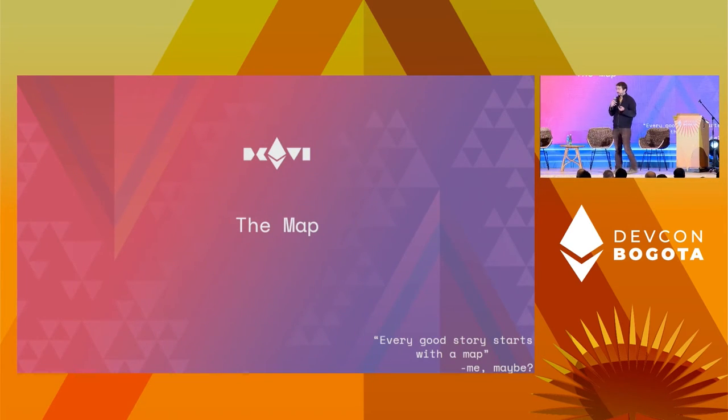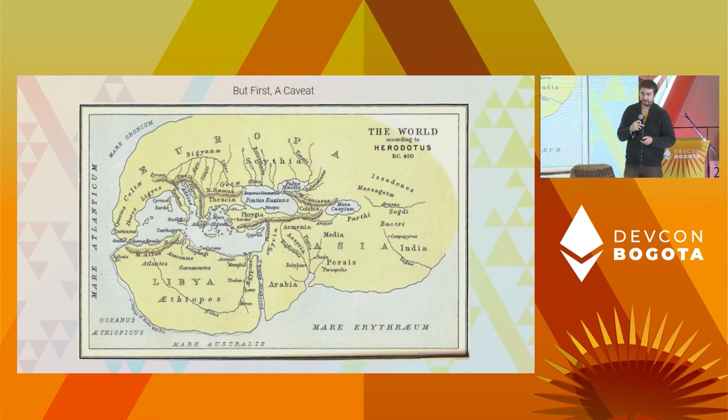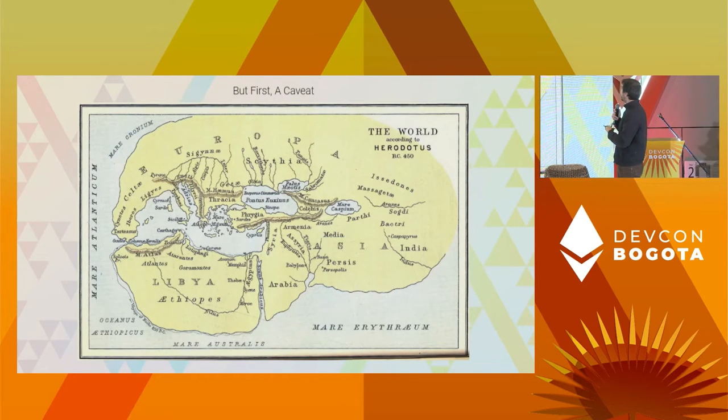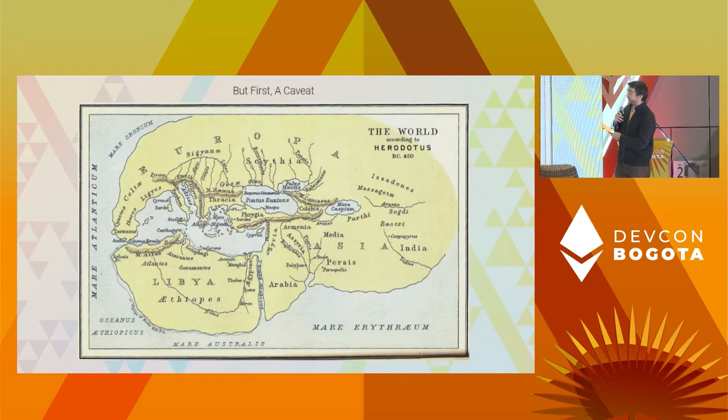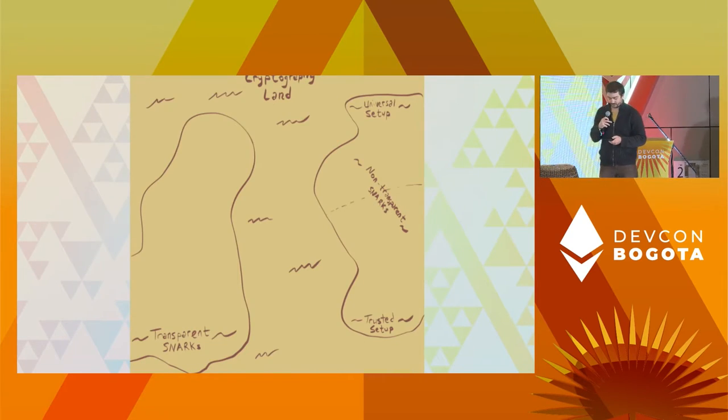Now we start our story. I like maps — and stories with maps. But a quick caveat: this is a map of the world in 450 BC. It's accurate, but clearly not the full truth — there's a whole lot to be discovered still. Here's our map of cryptography land, especially when looking at Snarks. We've got two major continents: transparent Snarks and non-transparent Snarks. Non-transparent Snarks require some sort of trusted setup — like the KZG trusted setup ceremony discussed with danksharding. Transparent Snarks don't require this kind of trusted setup ceremony; you can run them out of the box.